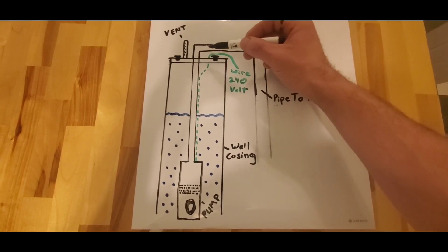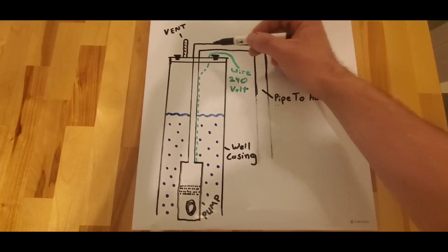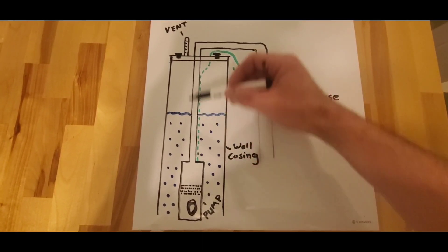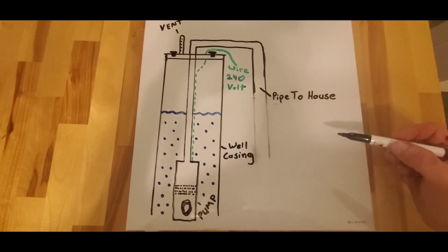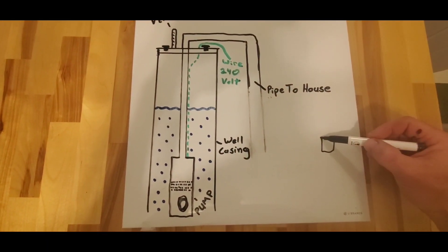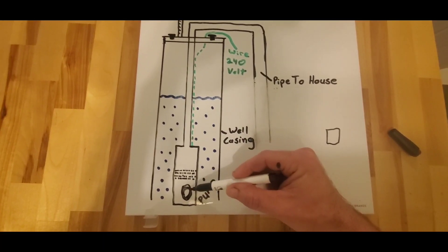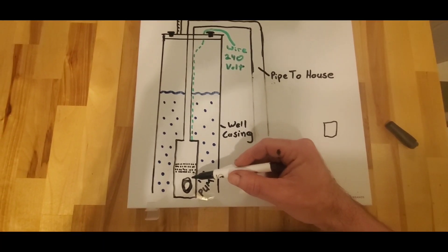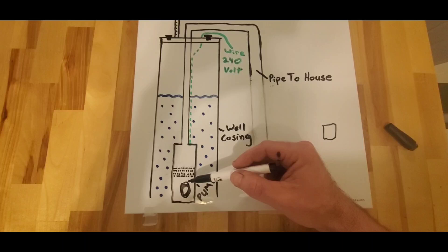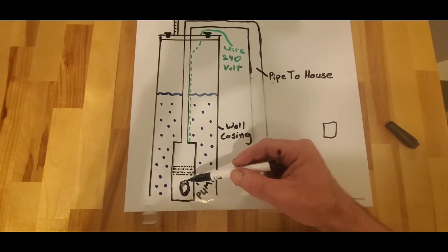Because the ice obstruction in this pipe here will not allow it to satisfy the pressure switch over here at the house, what happens is the electric motor becomes extremely hot, and it will eventually turn itself off on a thermal overload. Now that's upwards of 200 degrees.